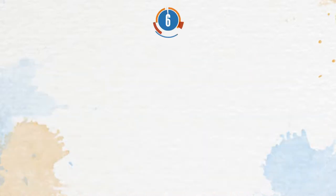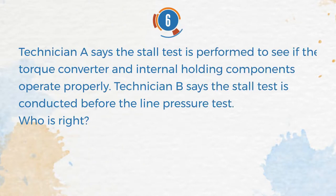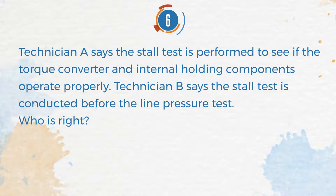Number 6. Technician A says the stall test is performed to see if the torque converter and internal holding components operate properly. Technician B says the stall test is conducted before the line pressure test.